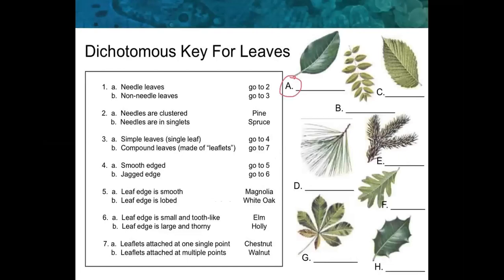Here's an example — a dichotomous key for leaves. We are going to look at leaf A. What number do we start at? One. Needle leaves or non-needle leaves? Non-needle. So you look over — what does it tell you? Go to three. You skip two and go to three. Does it have simple leaves — is it a single leaf or a compound leaf made of leaflets? Go to four. Is it smooth-edged or jagged? It's smooth-edged. The leaf edge is smooth or is it lobed? Magnolia. So that means that is a magnolia — you would write that this is a magnolia, and now you're done with A.